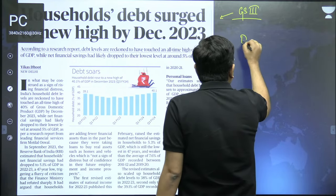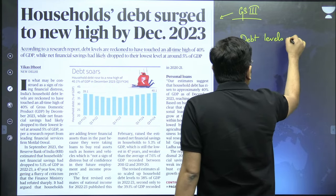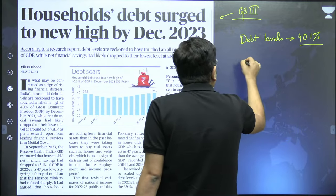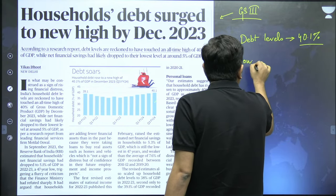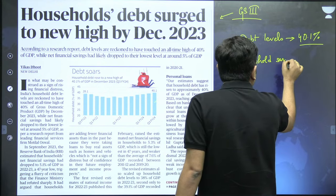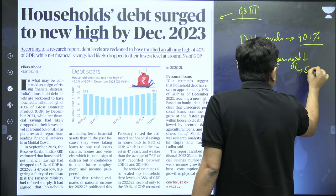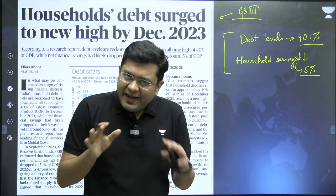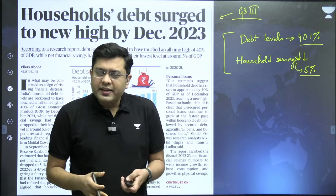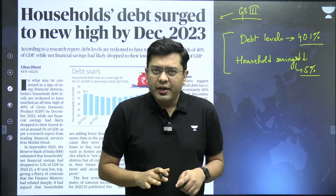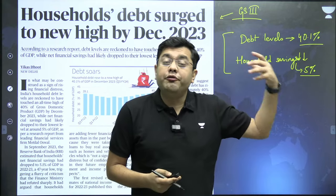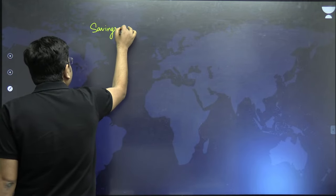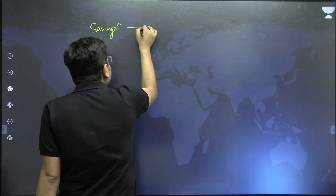So there are two key extracts: debt levels have risen to around 40.1% for households, and simultaneously household savings have gone down to around 5%. Together, both of these are a harbinger of bad news. Ideally, for any economic setup, if the national savings rate is higher, it is better for national growth in the long run — savings deployed into capital assets, healthcare, education, and welfare schemes can yield further growth.